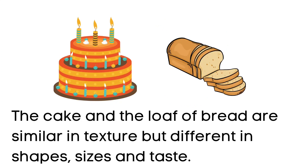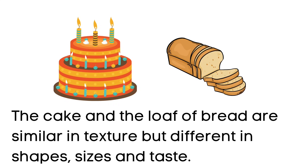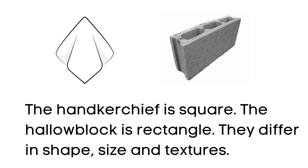The glass and pitcher are similar in texture but different in size and in shape. The cake and the loaf of bread are similar in texture but different in shapes, sizes, and taste. The handkerchief is square. The hollow block is rectangle. They differ in shape, size, and texture. The plate and the mirror are both round. They are similar in shape and texture.